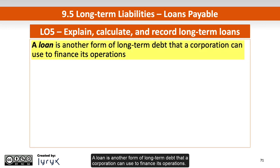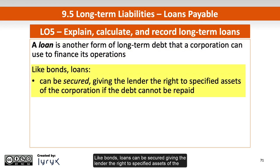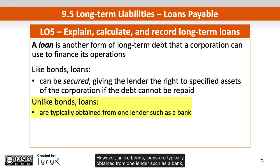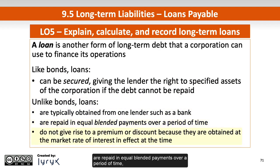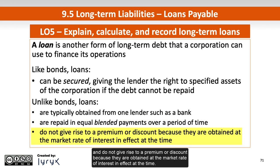A loan is another form of long-term debt that a corporation can use to finance its operations. Like bonds, loans can be secured, giving the lender the right to specified assets of the corporation if the debt cannot be repaid. However, unlike bonds, loans are typically obtained from one lender such as a bank, are repaid in equal blended payments over a period of time, and do not give rise to a premium or discount because they are obtained at the market rate of interest in effect at the time.